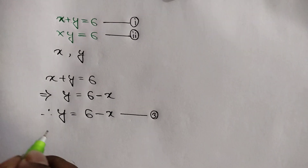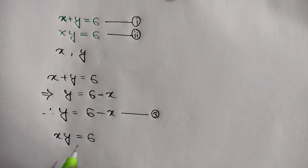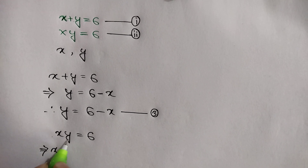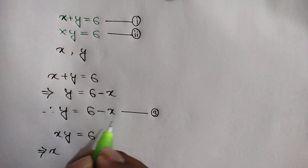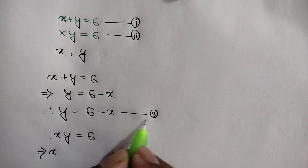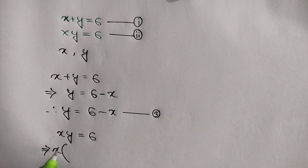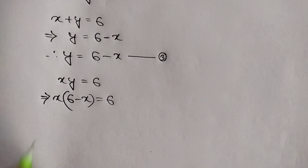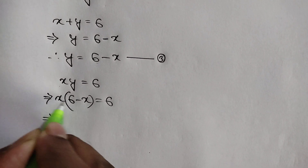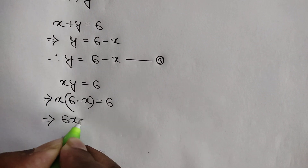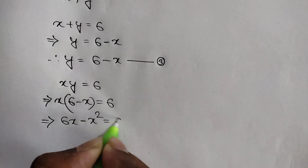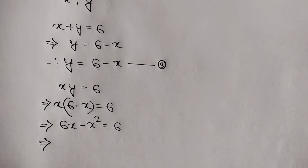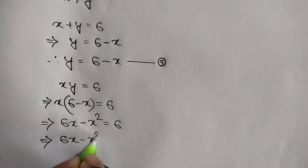Now from equation number 2, xy is equal to 6. Here we can substitute y with 6 minus x, because y is equal to 6 minus x from equation number 3. So we write x times (6 minus x) is equal to 6, or 6x minus x squared is equal to 6.